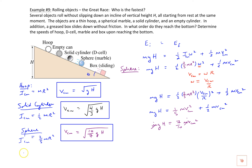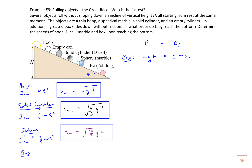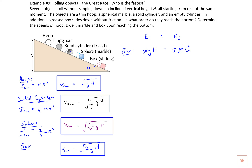What about the box sliding down? It has no rotational inertia — it's moving in a straight line, so it only has translational kinetic energy. We don't include any rotational kinetic energy term. All of the gravitational potential energy is converted into kinetic energy. The masses cancel, and the velocity of the box is v = √(2gh).